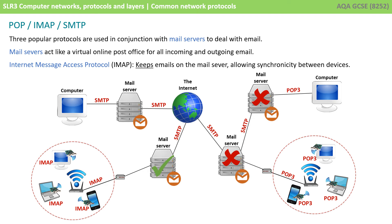The Internet Message Access Protocol, IMAP, is also used by mail clients. In a similar way to POP, however, when the email is retrieved, it leaves the original copy of the email on the server. So, for example, if I'm out in town and I log onto my mobile phone to check my emails, I connect to the remote mail server and retrieve my latest emails using the IMAP protocol. The original copy of the email remains on the remote mail server, meaning that when I go back into work or I'm home on my laptop and check my email, it's still there. IMAP prevents different devices from becoming out of sync with each other.